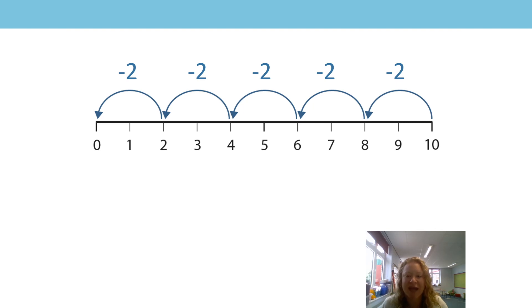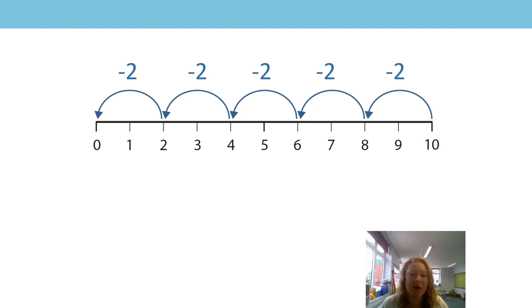Should we just count backwards again, because it's a little bit trickier? Ten take away two is eight, six, four, two, zero.